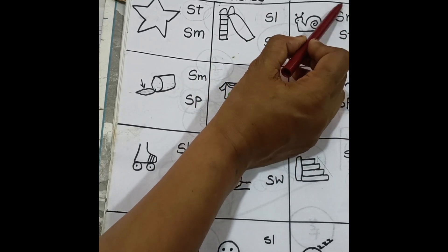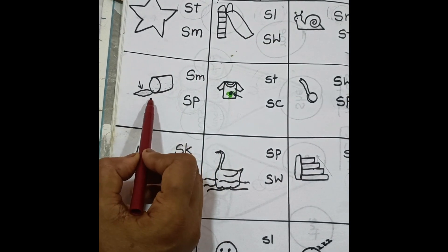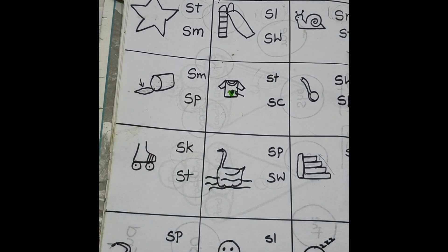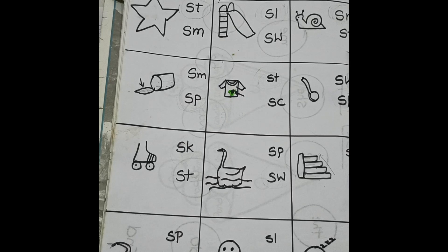Spill. Sp, sp, spill. So this is how we teach them blends for easy identification.